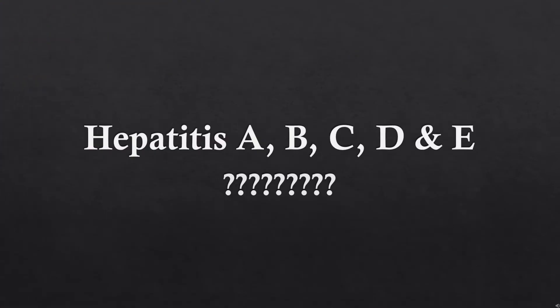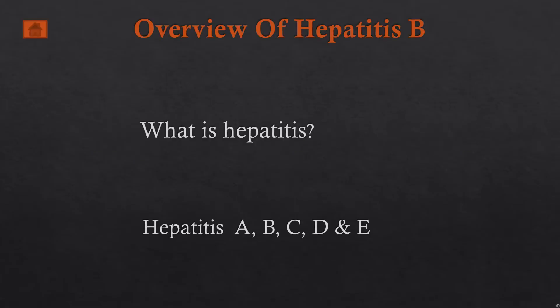Welcome to the self-talk session. We're going to have an overview of the five different viral types of hepatitis: hepatitis A, B, C, D, and E. So at the end of this video, you should be able to explain to a friend, briefly and without hesitation, what hepatitis is and differentiate between the five different types of viral hepatitis.